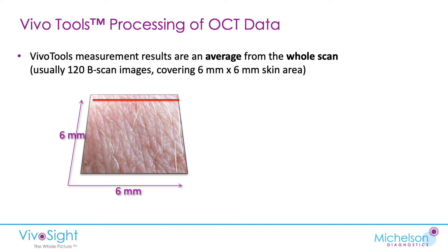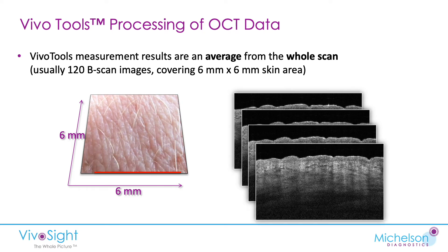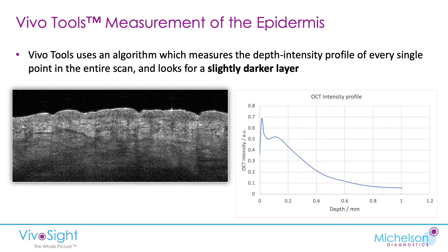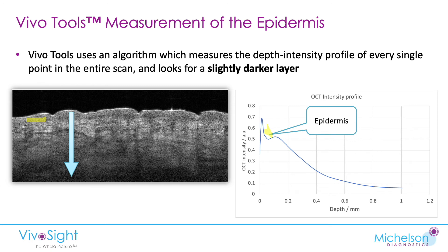Let's review the measurement of skin with the VivaTools. We look at the whole scan and extract the measurement of epidermal thickness across the whole stack. It uses an algorithm that measures the depth intensity profile of every single point in the scan, looking for that slightly darker layer. That shows up in the intensity profile as we go from top to bottom — shown left to right in this picture — with increasing depth, where the darker area indicates the epidermis. We measure the boundary at every single point in the entire scan and extract an average.